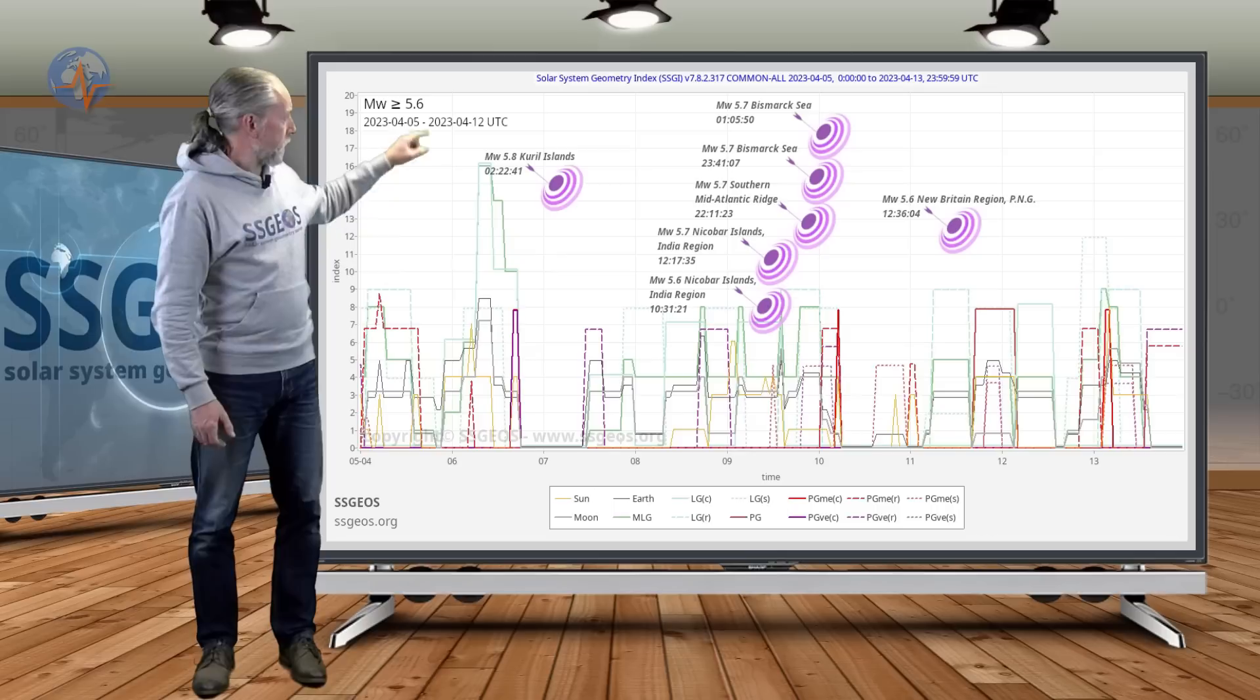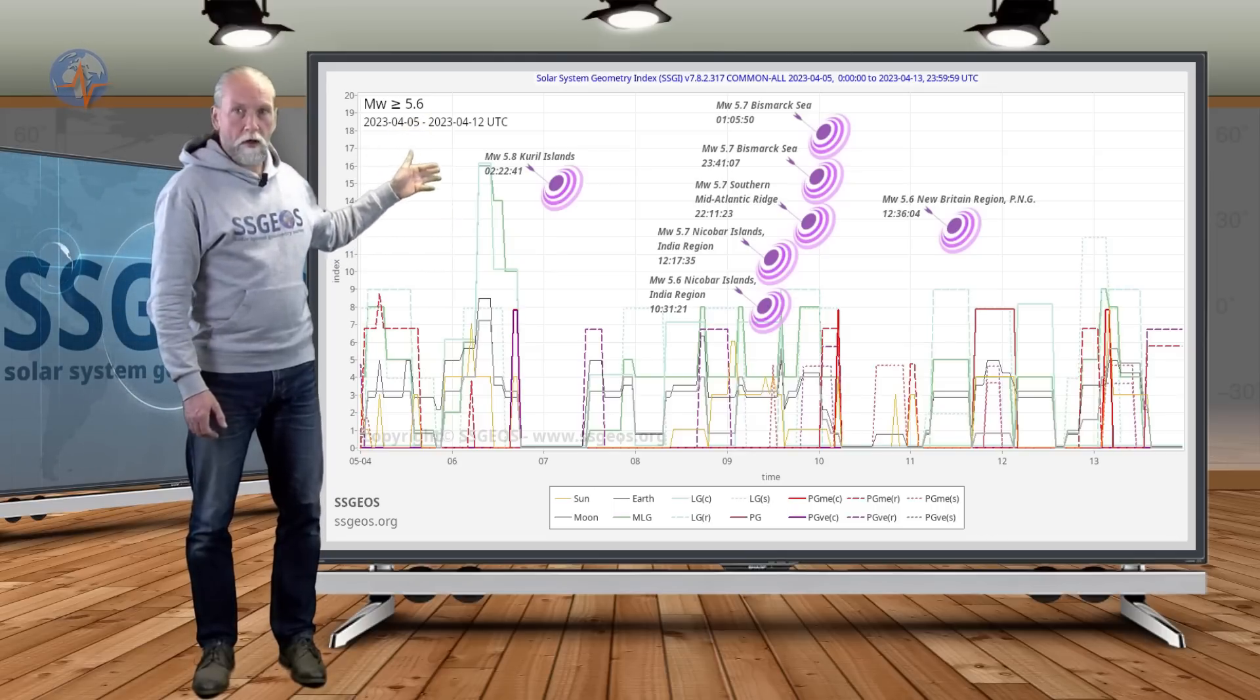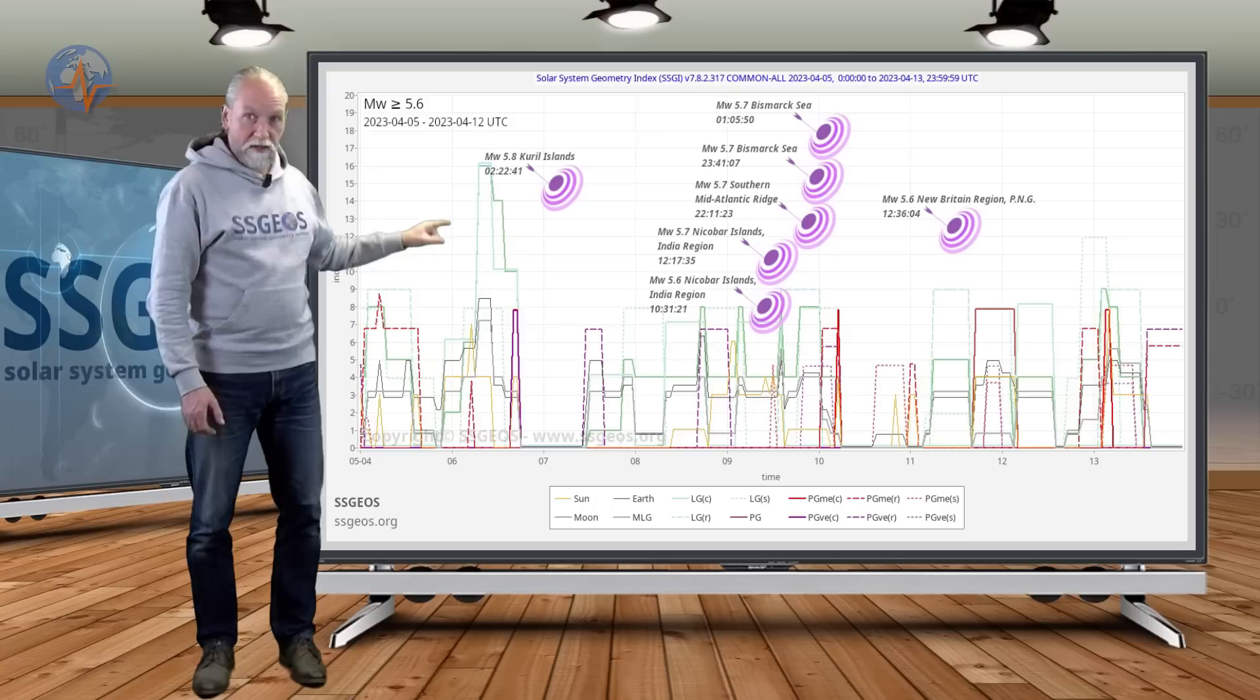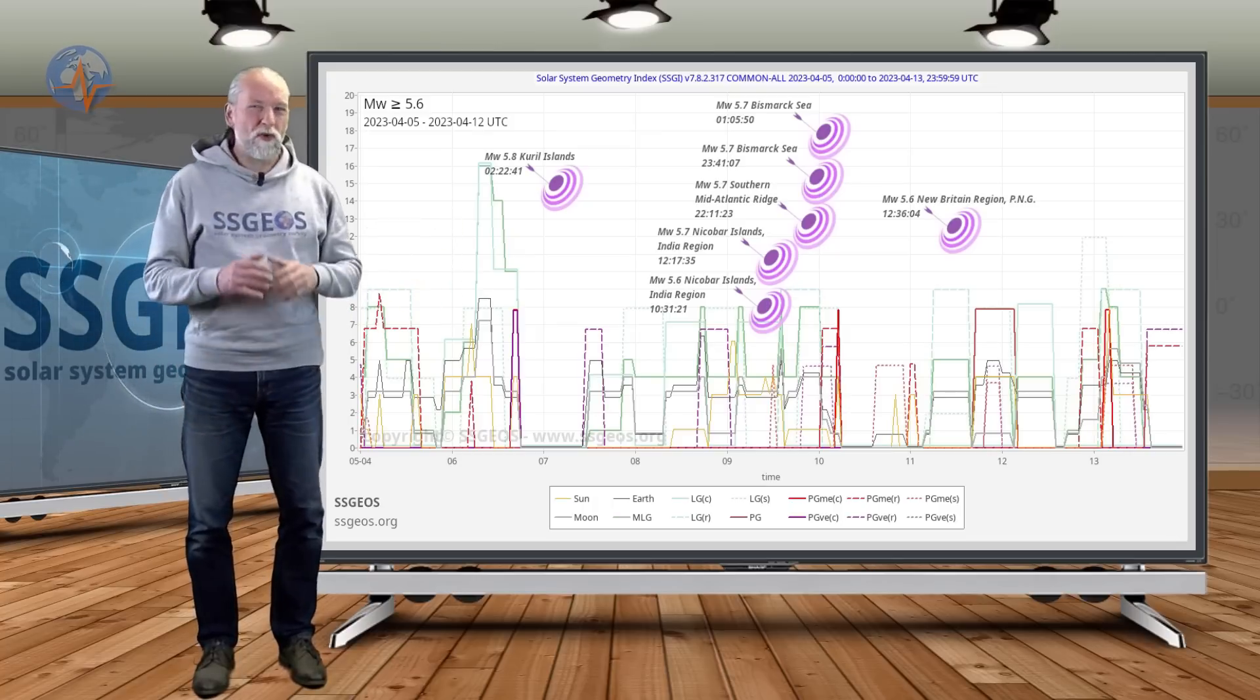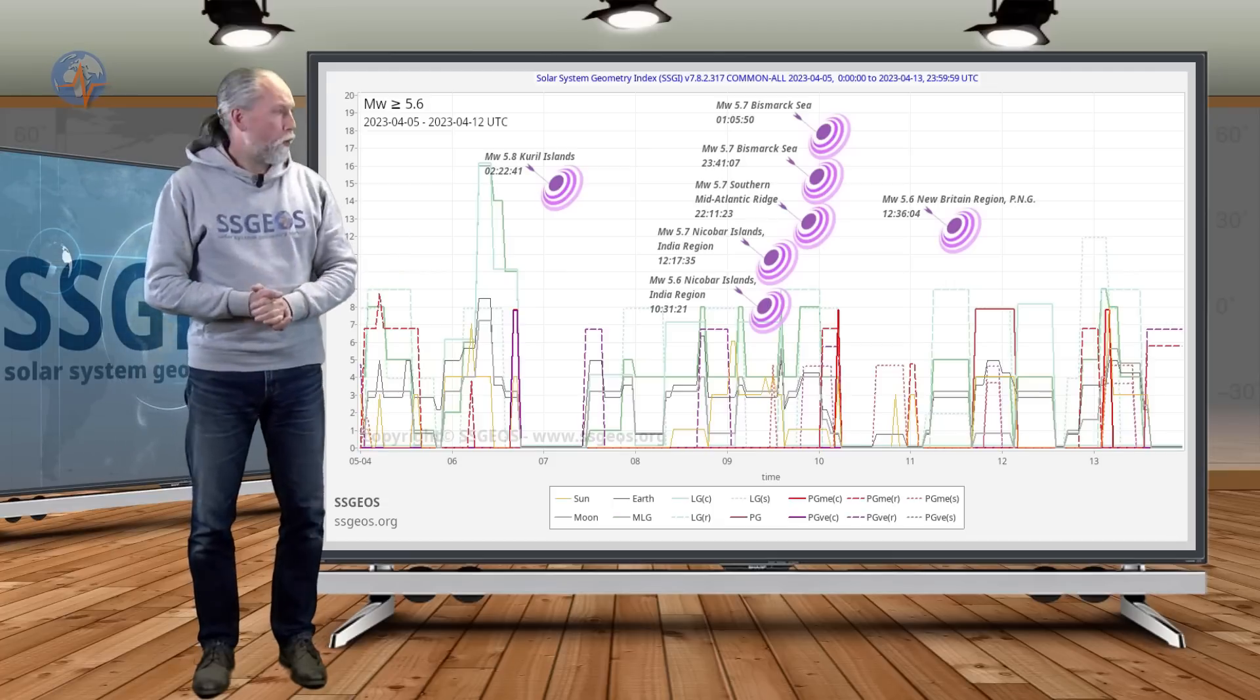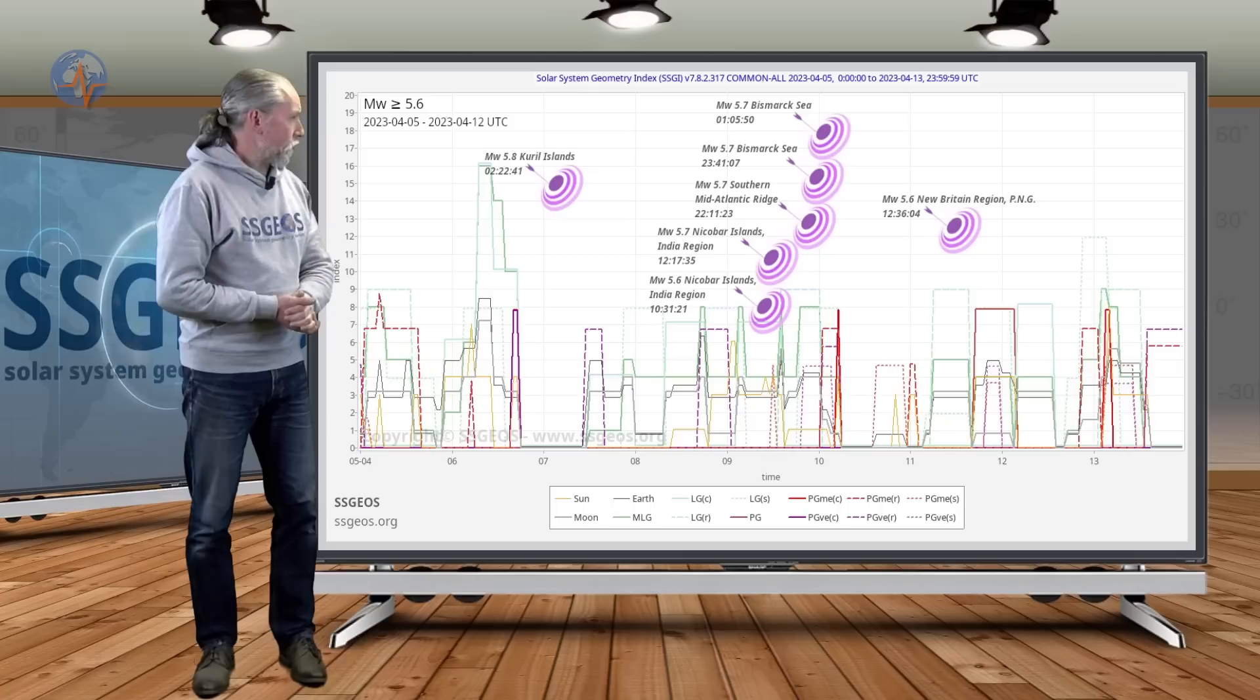We also see a huge clustering of moderate to strong seismic activity, mostly around 5.7, and that happened on the 9th and 10th at the time of this critical planetary geometry. This was a red peak, like I said, not too critical. And we also see some critical geometry involving Venus, these are the purple peaks on the 7th and also on the 8th.